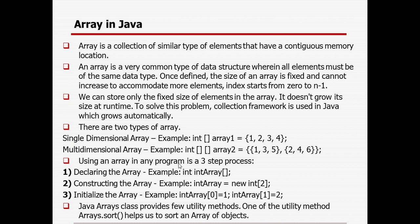Using an array in a program is a three-step process. First, we need to declare the array data type — for example, integer type array. Then we need to construct the array, specifying what the size will be. Then we need to initialize the array, which means we need to provide the values for the array elements.